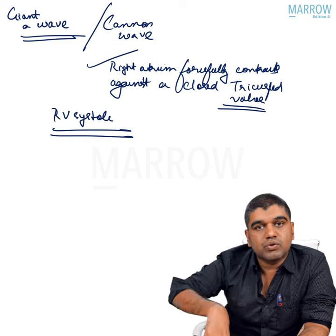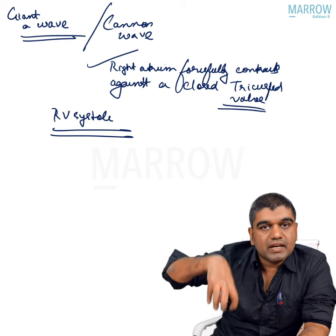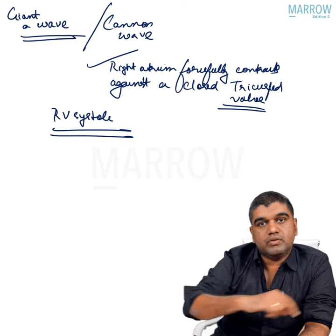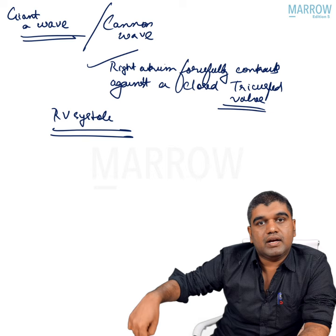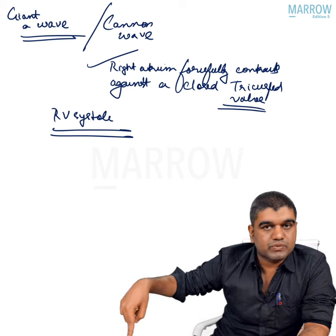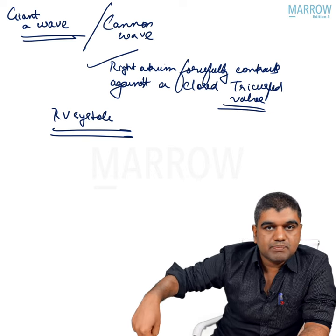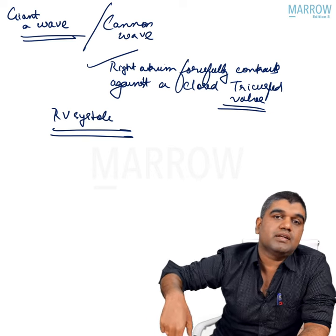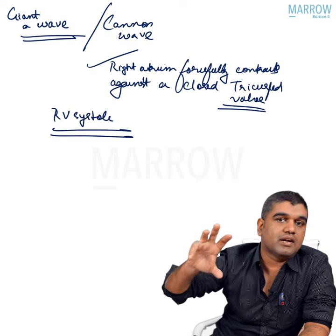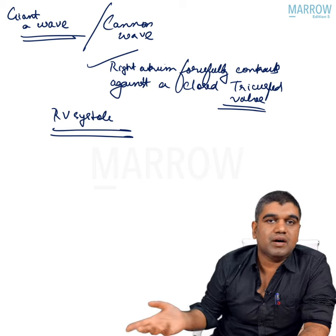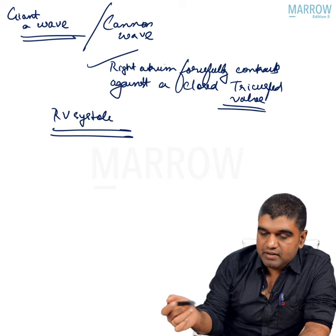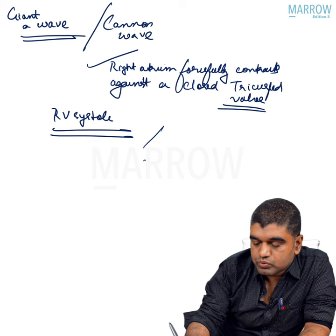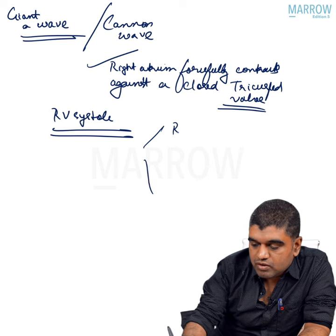This is a period of systole where the ventricle is contracting and the tricuspid valve is closed. The AV valve and the semilunar valves will open soon. At this point, the atrium is contracting — this is a very abnormal phenomenon called cannon waves. Cannon waves can be seen in two settings.